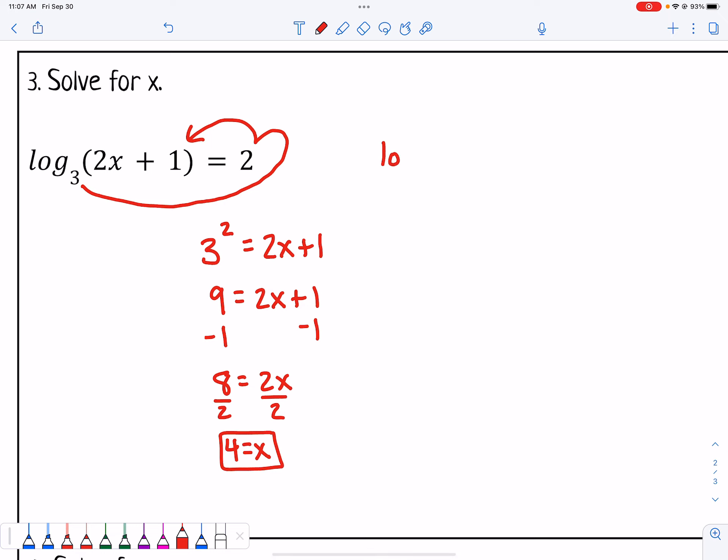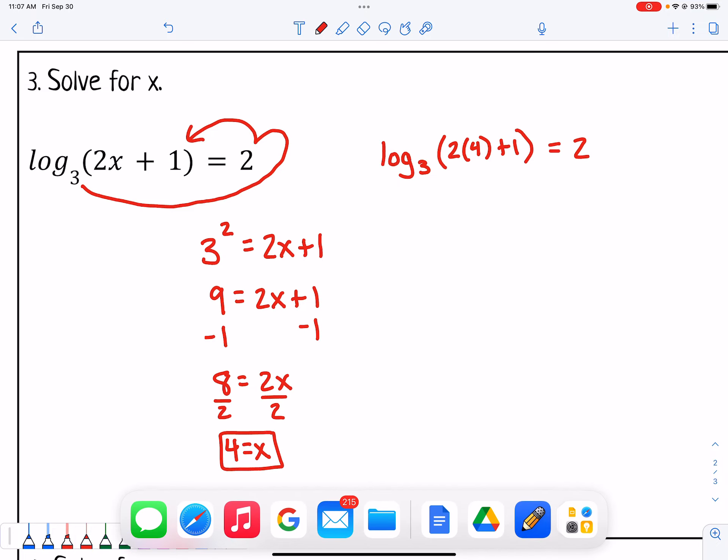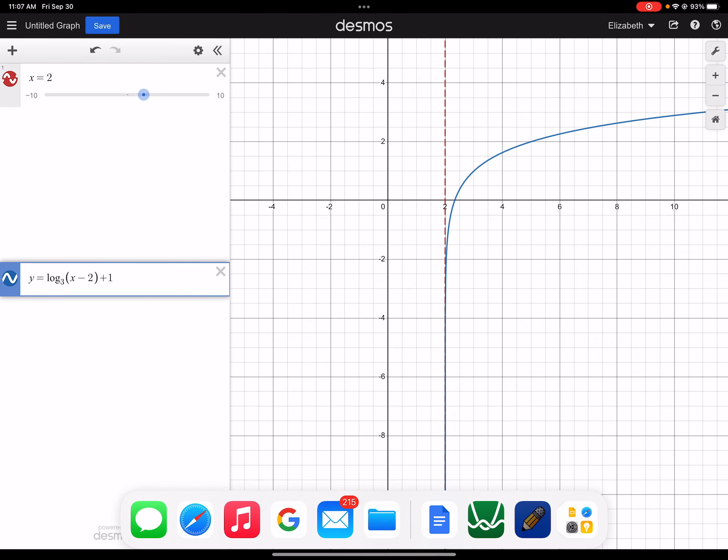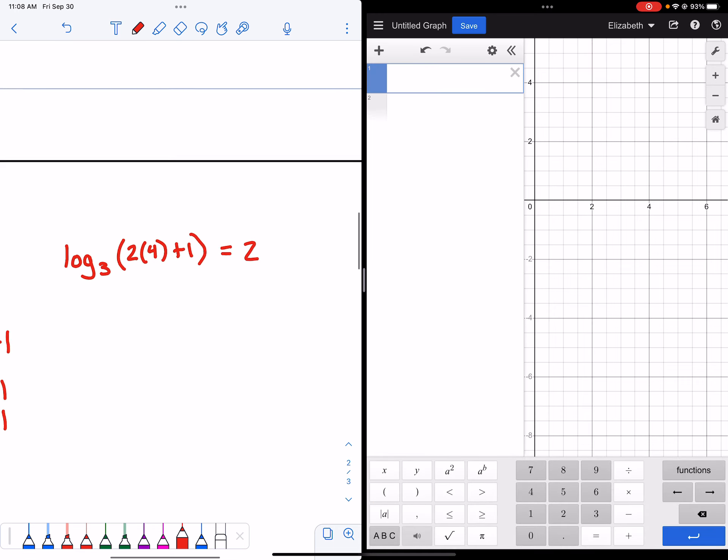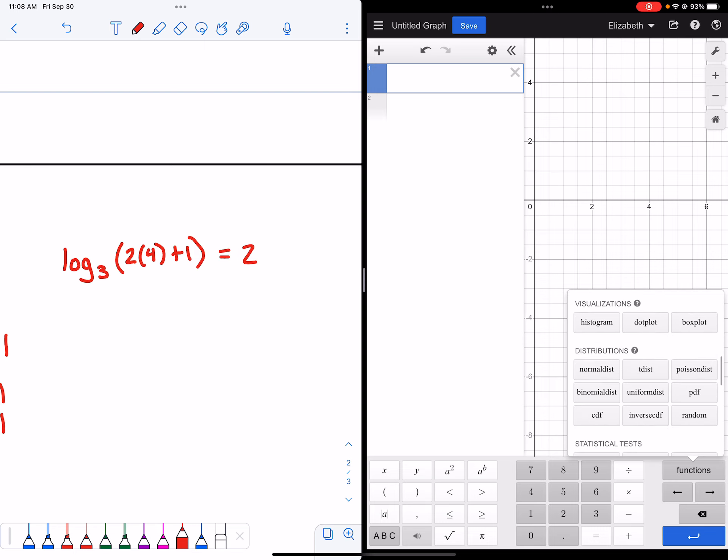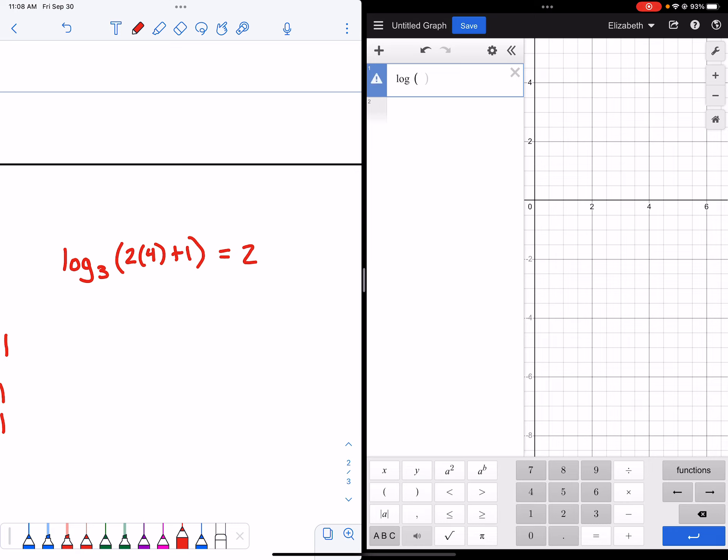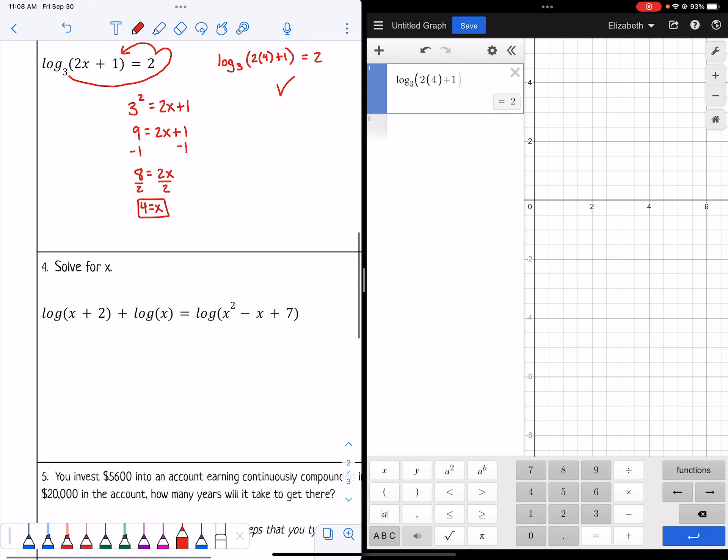You can also check your answer by plugging that back in the calculator. You can say log base 3 of 2 times 4 plus 1 and make sure it does equal 2. Let me bring Desmos up. Just type it all in, and you can check and make sure it works. If I go to my functions menu and find the one I need with the little base, I got log base 3 of 2 times 4 plus 1, and then that does equal 2. So I've checked and made sure that works out.